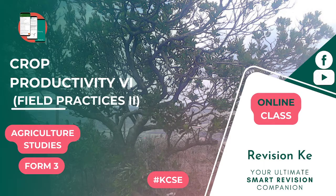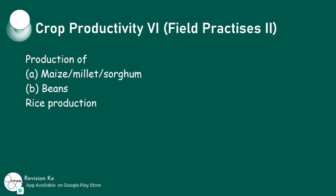So this topic — we are going to look at three subtopics: the production of maize, millet and sorghum; the production of beans; and finally rice production. Under these three subtopics, we should be able to describe management practices in crop production and carry out management practices for the given crops. See you in our next class.